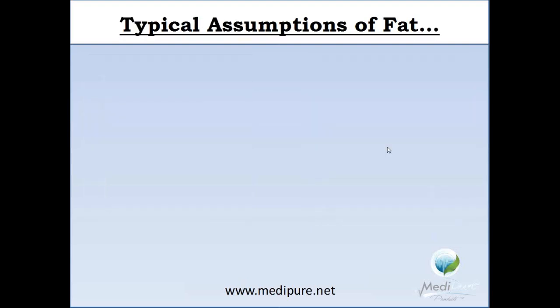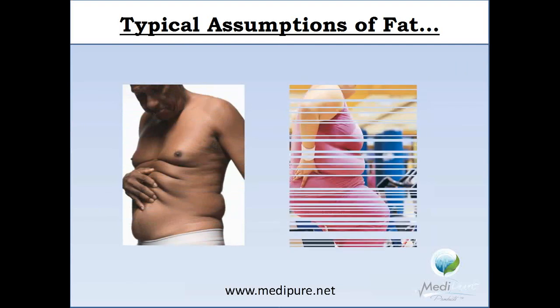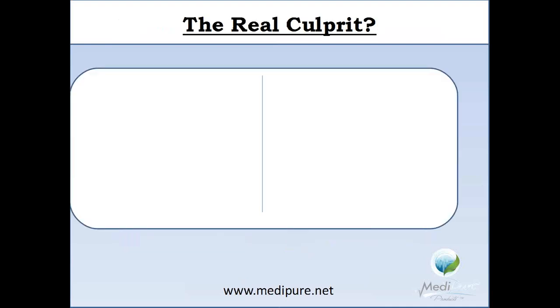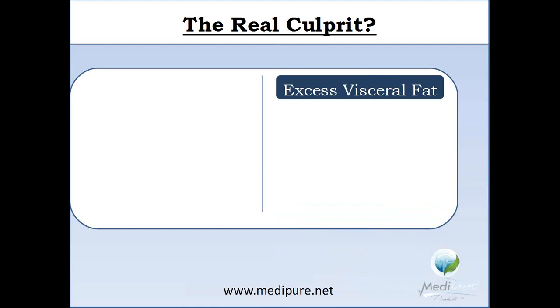Now, there are some typical assumptions when it comes to fat. Here you'll see two different images. When we think of a person that's overweight or obese, we think of the paunch or the love handles, or side fat that's kind of hanging out. We typically attribute that to an excess of subcutaneous fat — the fat that lies over the muscle area. While there can be quite an accumulation of fat there, that isn't really the true culprit. So the question is, who is the real culprit? And the answer is actually excess visceral fat.